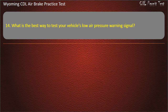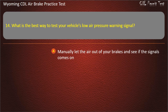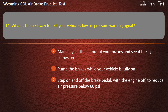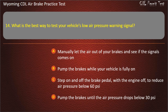Question 14. What is the best way to test your vehicle's low air pressure warning signal? Manually let the air out of your brakes and see if the signal comes on. Pump the brakes while your vehicle is fully on. Step on and off the brake pedal with the engine off to reduce air pressure below 60 pounds per square inch. Pump the brakes until the air pressure drops below 30 pounds per square inch. Answer: Step on and off the brake pedal with the engine off to reduce air pressure below 60 pounds per square inch.